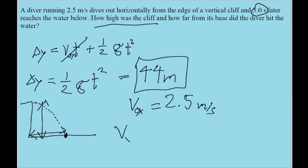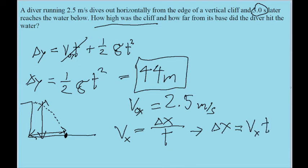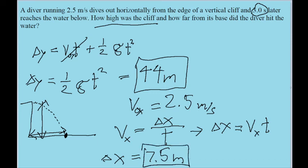To find out how far they traveled, we use our basic velocity equation: the velocity in the x direction, v sub x, is equal to the diver's change in x position divided by time. Solving for delta x gives us: delta x equals v sub x times t. The constant speed in the x direction is given as 2.5 meters per second, multiplied by the time of 3.0 seconds, which gives a value of 7.5 meters. So over 3 seconds, the diver traveled 7.5 meters in the horizontal direction — that is our horizontal range and how far from the base of the cliff the diver lands.